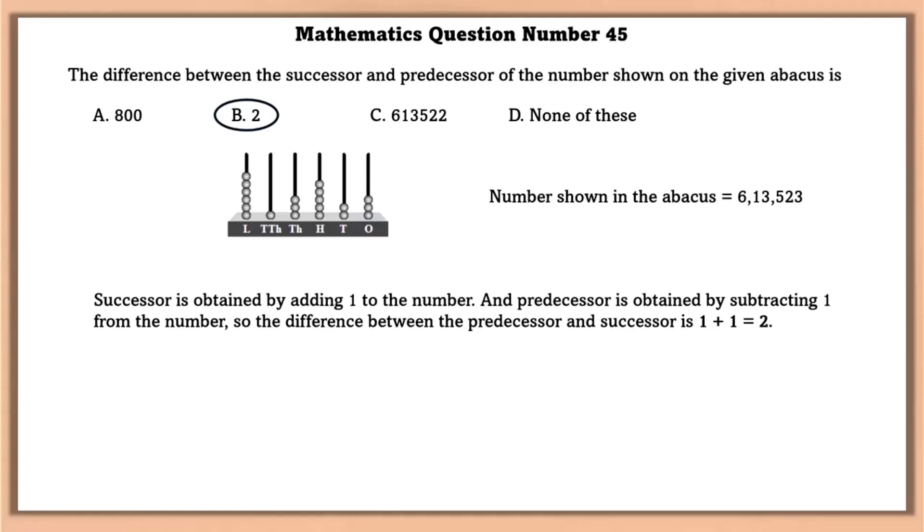Successor is obtained by adding 1 to the number and the predecessor is obtained by subtracting 1 from the number. So difference between the predecessor and successor is equal to 1 plus 1, that is 2. In general, the difference between the successor and predecessor of any number is always 2.